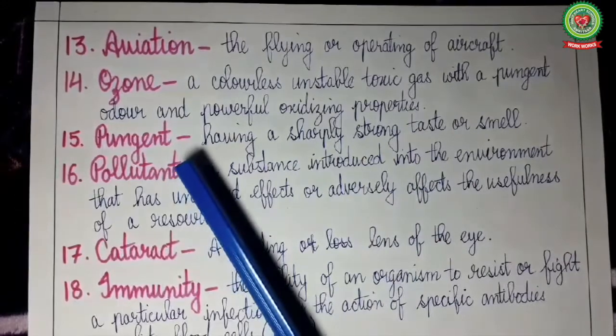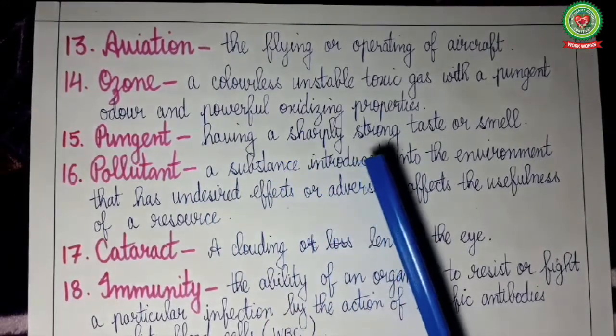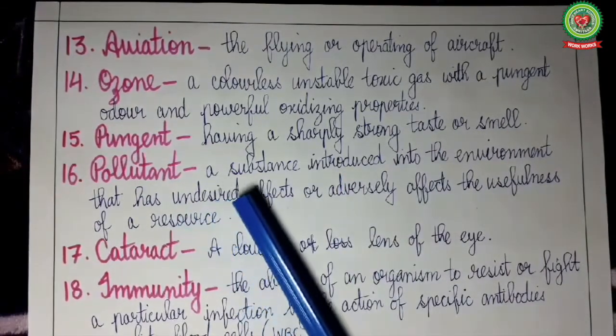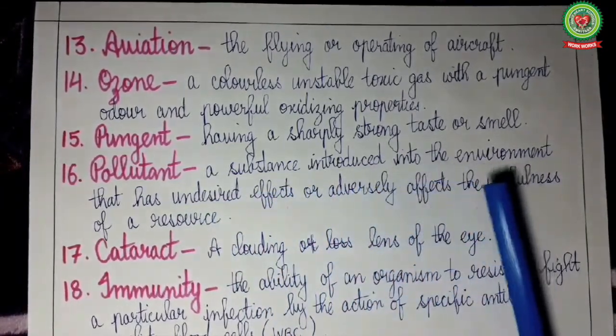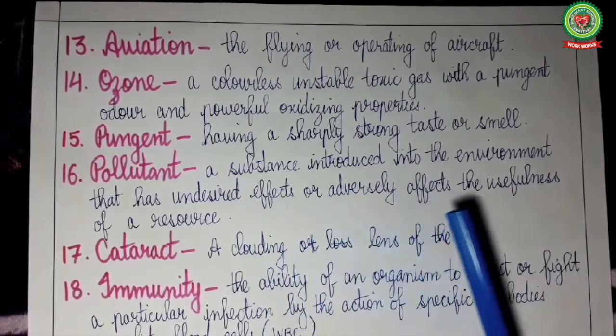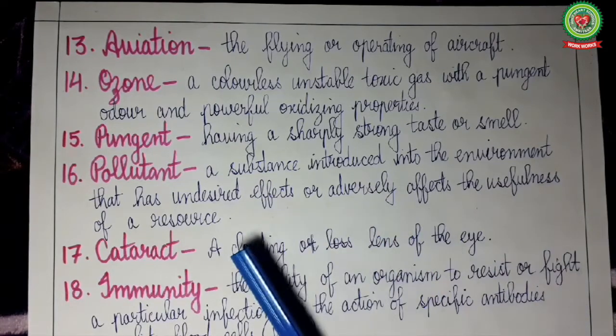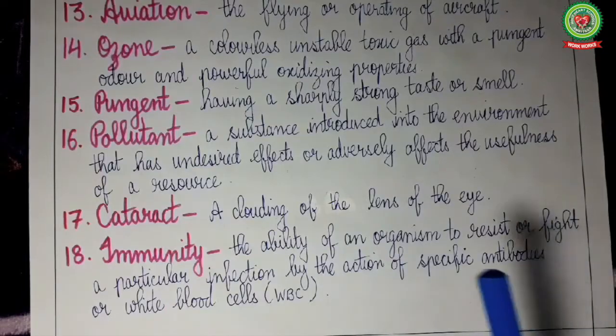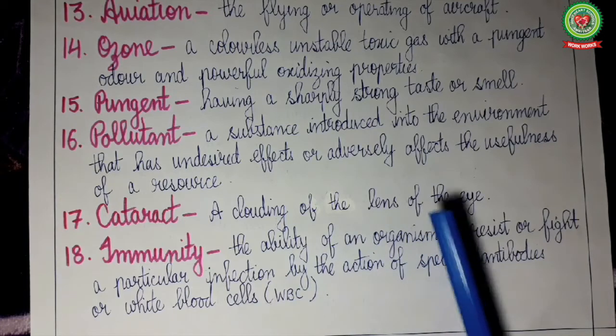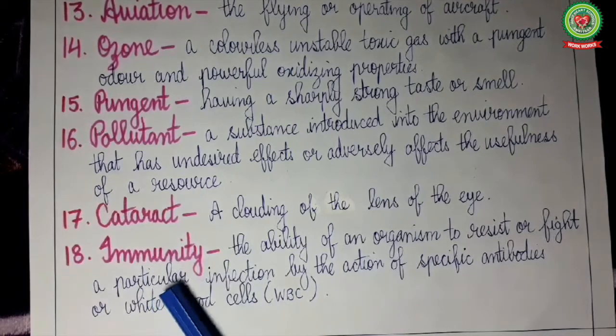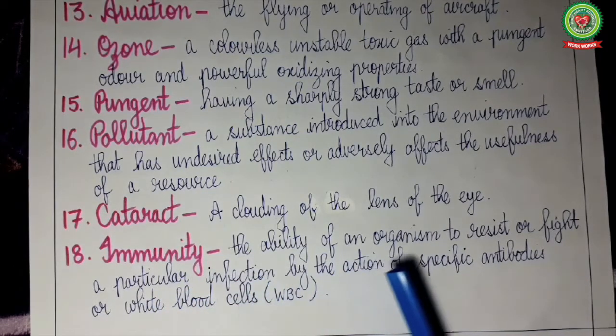Pungent means having sharply strong taste or strong smell. Pollutant: a substance introduced into the environment that has undesired effect or adversely affects the usefulness of any resource. Cataract: a cloudy eye or clouding of the lens of the eye is called cataract. In Hindi, cataract is called motiyabind. Immunity: the ability of an organism to resist or to fight a particular infection or disease by the action of specific antibodies, they are WBC or white blood cells.